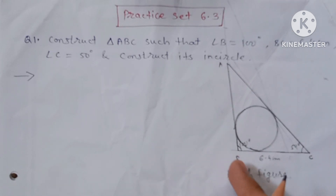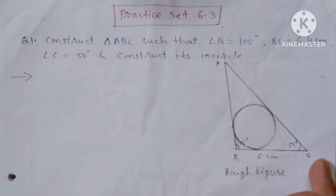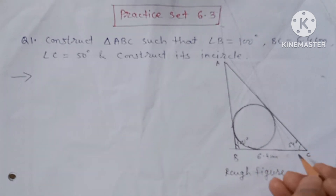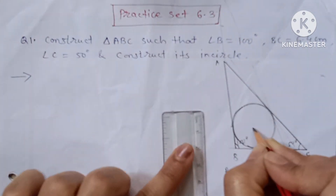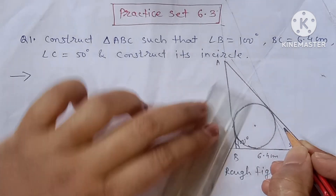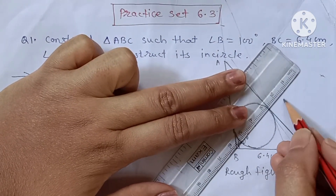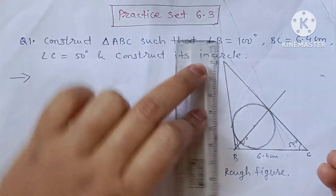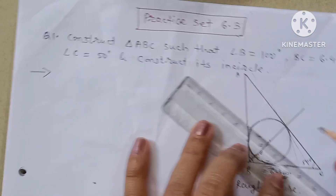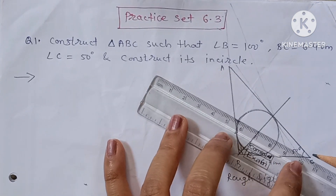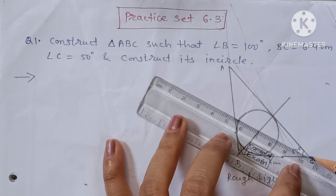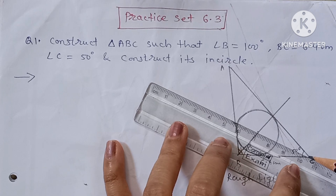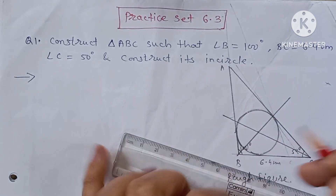This is your angle B — 100 degrees, and angle C is equal to 50 degrees. BC is 6.4 cm and this is your center. You can bisect the angles to get this point. But this is our rough figure, so first we will draw the circle figure.